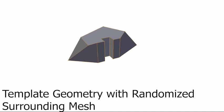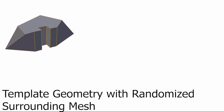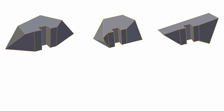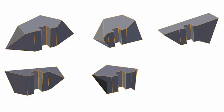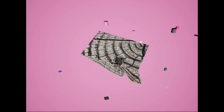We add a randomized mesh surrounding the template to generate different examples of target objects. Finally, we randomize the texture of each object.